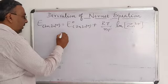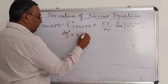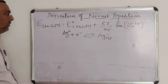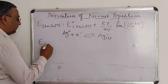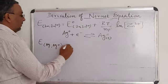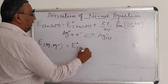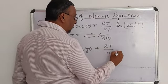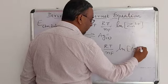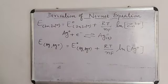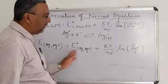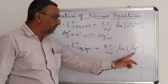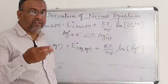We can write this equation for any electrode. For example, if we have a silver electrode, the equation becomes: E = E°(Ag⁺/Ag) plus RT/NF into ln of concentration of Ag⁺. The EMF of the silver electrode depends on the concentration of Ag⁺ ions with which it is in contact.